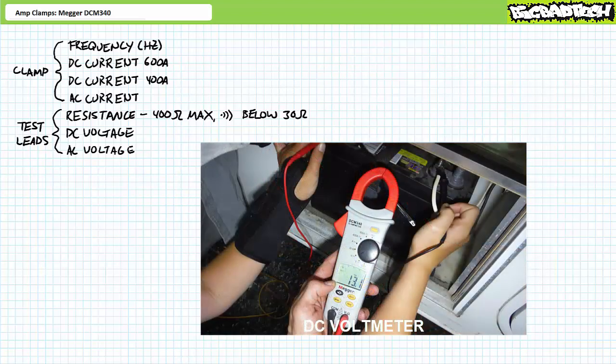In DC voltmeter mode, the Mega DCM340 demonstrates roughly 13.1 volts appears across the terminals of a battery undergoing the float stage of the charge process.